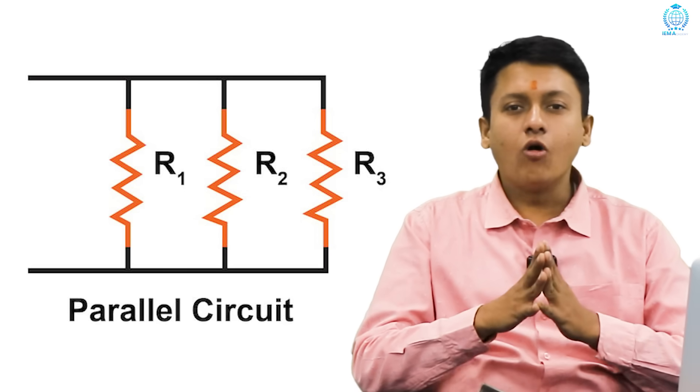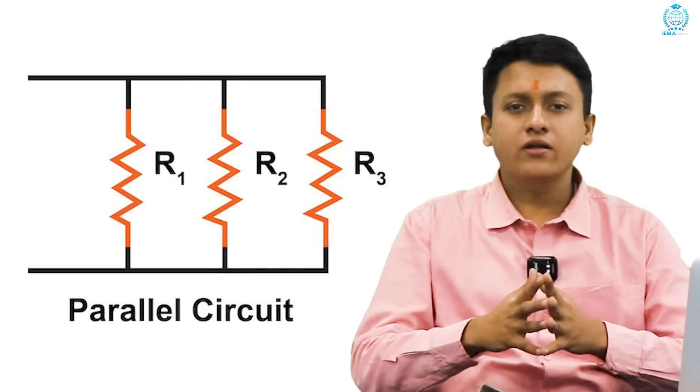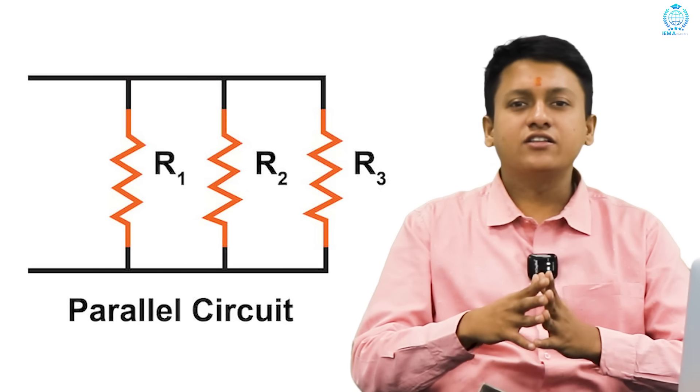For example, home wiring. Even if one fan is off, lights still work. The mnemonic for this is, series adds, parallel divides. Point number six,